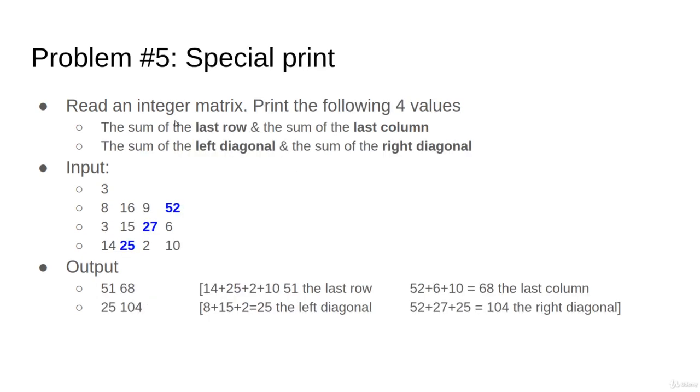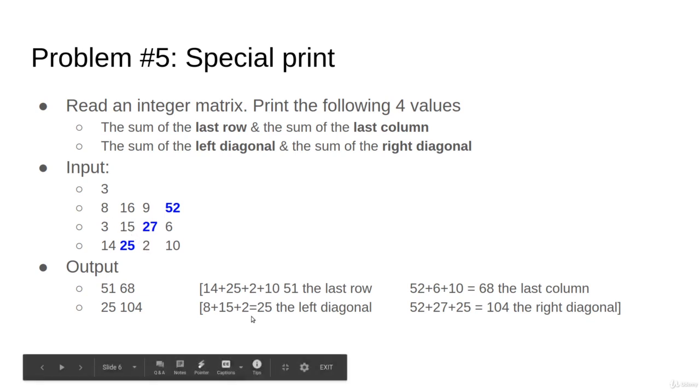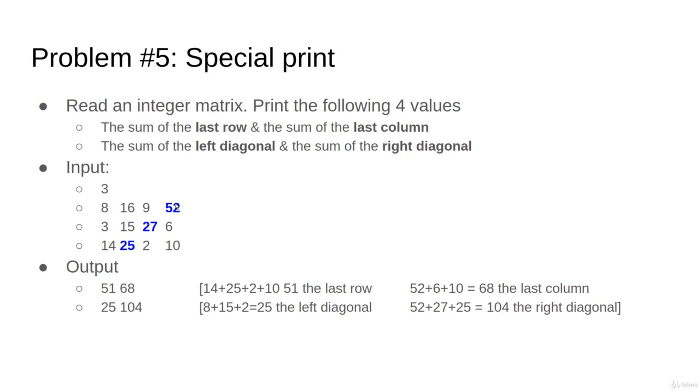Special print. You will read an integer matrix and you would like to print the following four values: the sum of the last row and the last column. For example, in this matrix here, the last row will be these four guys, which are 51, and these three guys, which are the last column. Also, the left diagonal and the right diagonal. The left diagonal comes from here, go one step, go one step, so 8, 15, 2. The right diagonal starts from the end value here and goes step by step. This is called the diagonal, and this is in a matrix as you see. So you just need to print these four values.